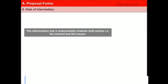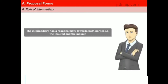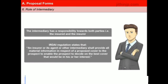The intermediary has a responsibility towards both parties, that is the insured and the insurer. An agent or a broker who acts as the intermediary between the insurance company and the insured has the responsibility to ensure that all material information about the risk is provided by the insured to the insurer. IRDAI regulation states that an insurer or its agent or other intermediary shall provide all material information in respect of a proposed cover to the prospect, to enable the prospect to decide on the best cover that would be in his or her interest.